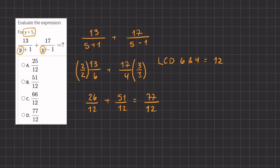Because we cannot simplify this fraction any further, 77 over 12 is our final answer, which is represented in answer D.